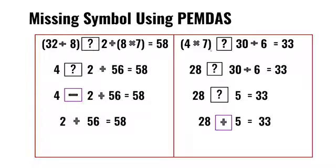4 times 7 inside parentheses, question mark, 30 divided by 6 equals 33.